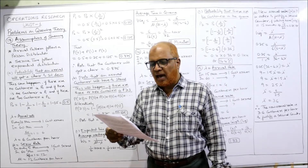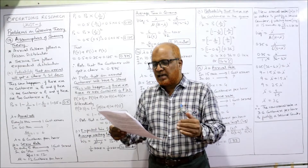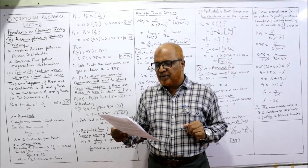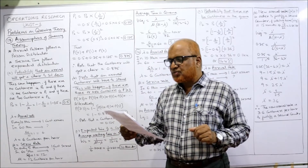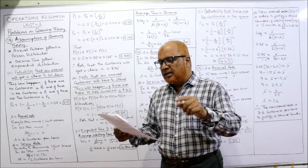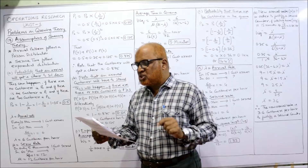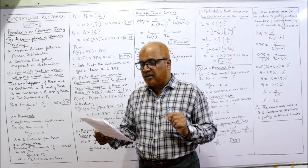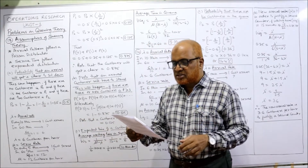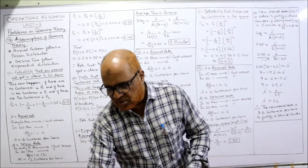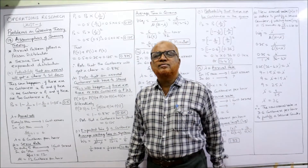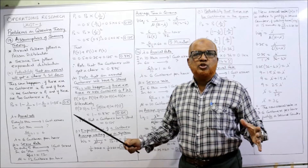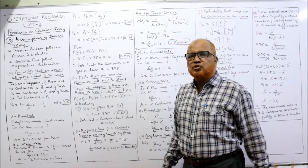On average, one customer arrives every 10 minutes and each customer takes 5 minutes to be served. Making suitable assumptions, find: (1) the probability that an arrival will get a chair to sit down, (2) the probability that an arrival will have to stand, and (3) the expected waiting time.